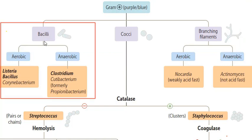Bacilli, the rod-shaped bacteria, are classified as aerobic and anaerobic. In the aerobic category, we have Listeria, Bacillus, and Corynebacterium, while in the anaerobic category we have Clostridium and Cutibacterium.